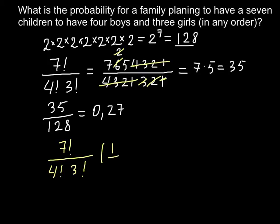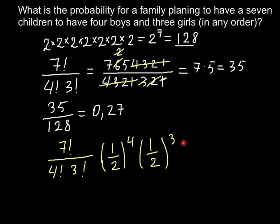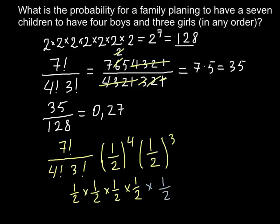The probability to have a boy is one half, raised to the power of four, and we also multiply by the probability to have a girl, which is also one half, raised to the power of three. This part of the formula is the same as multiplying one half four times for boys and three times for girls.